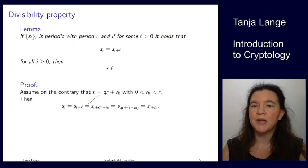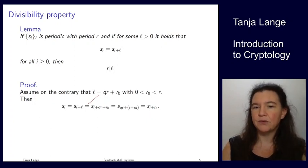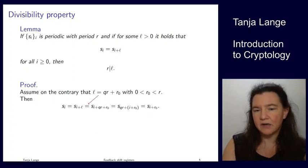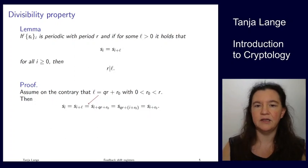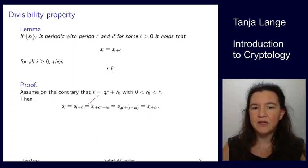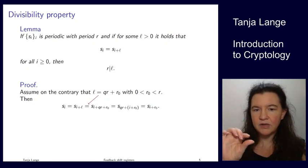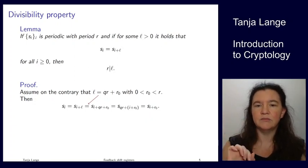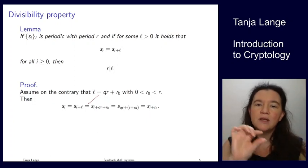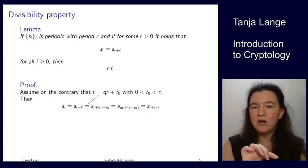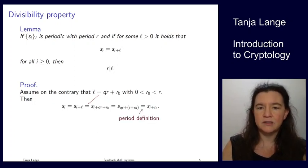And our period. So after r times, we're at the same spot. So any multiple of r, we're also at the same spot. So we can just ignore any multiple of r in the index. And so what we have there is that q times r, well, that is the same as we can forget about it. So it's the same as 0, plus i plus r0. So we now have proven that s_i is the same as s_{i+r0}. So here we're using the definition of the period.